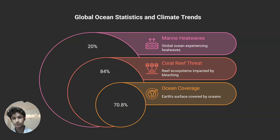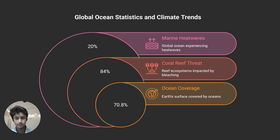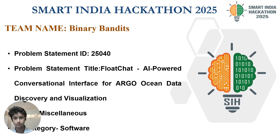Do you know we humans have mapped 100% of the Moon and Mars, but 95% of our own oceans remain unmapped? Hidden beneath the waves lies critical information locked away in complex files only experts can access.